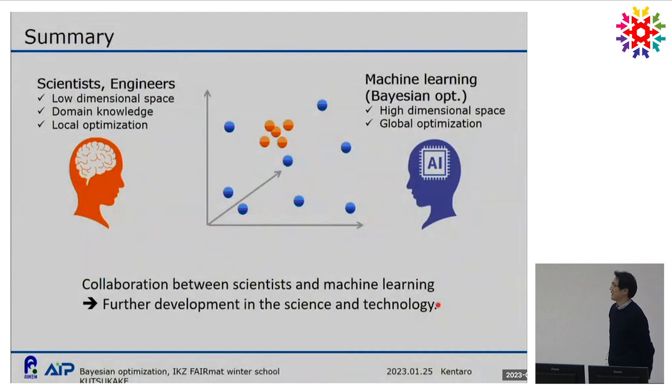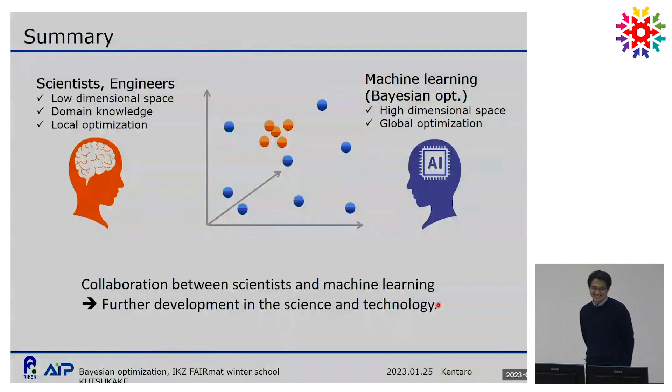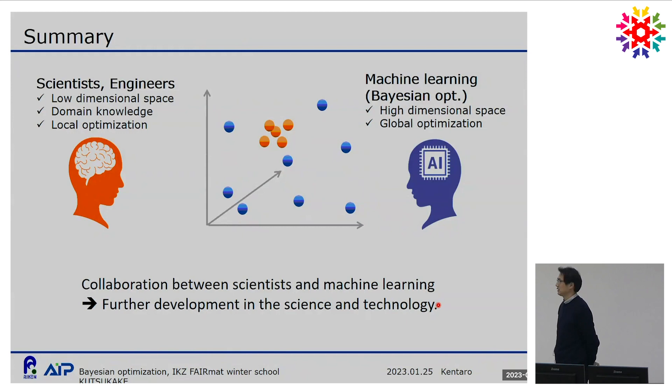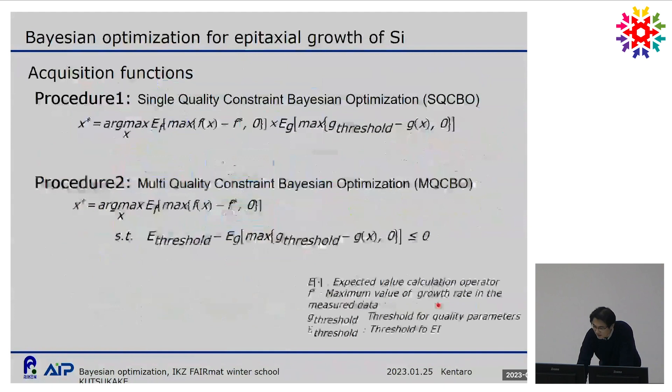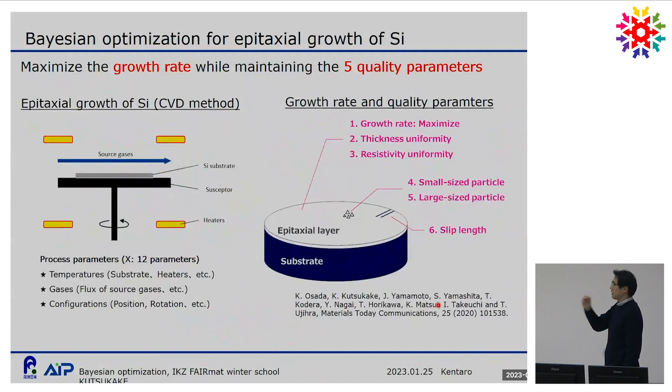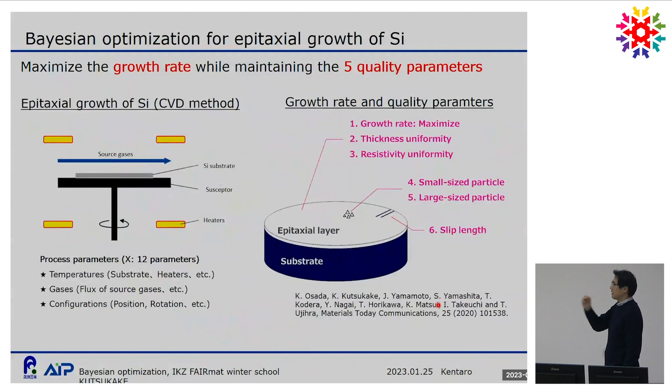Thank you very much. This is the first talk about crystal growth. Could you please elaborate — as all your examples were not about bulk crystal growth, where do you see the feasibility of applying this technique to bulk growth? For example, Czochralski silicon is the most popular material. Of course, bulk growth is very similar to this epitaxial thin film growth, but there is a big difficulty: bulk growth is a time-dependent process, so we have to overcome that problem. But I think we can apply Bayesian optimization to bulk growth as well.